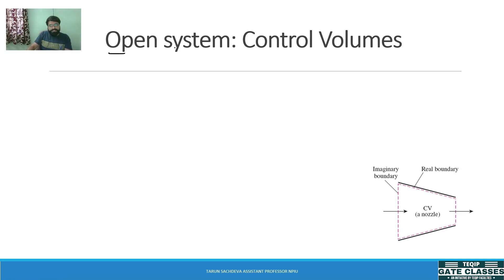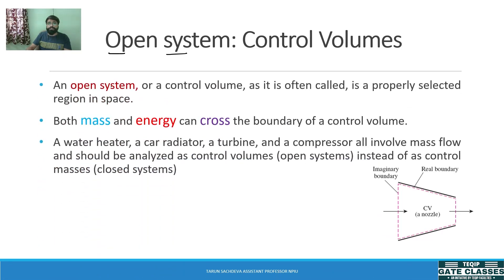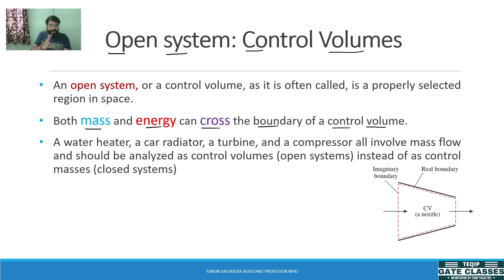The next type is the open system. An open system is a system in which both mass and energy can cross the boundary of the control volume. It is also known as control volume. In an open system, both mass and energy cross the boundary of the system — such a system is known as an open system.